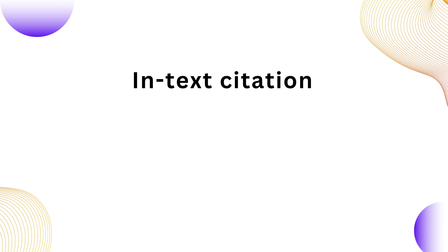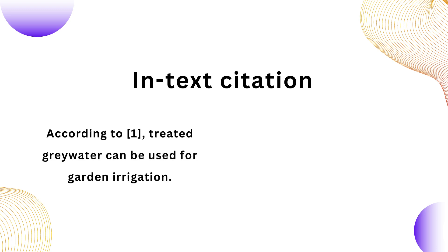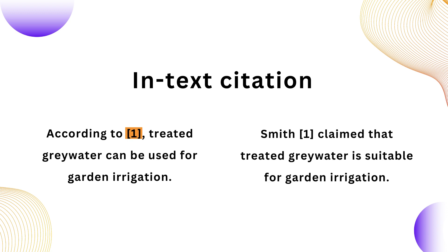You have two ways to do your in-text citation. One, you can add the citation number in brackets in the order in which the source appears in your text. Two, you can indicate the author's name followed by the citation number in brackets.